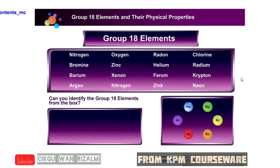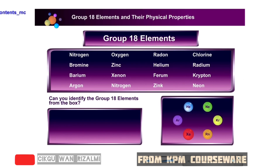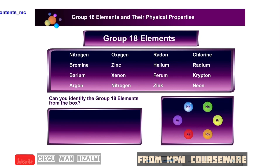Group 18 Elements. Group 18 elements are very useful in our daily lives. They make up almost 1% of the air. Can you identify the group 18 elements from the box of elements here?